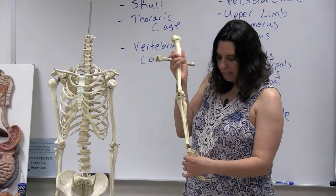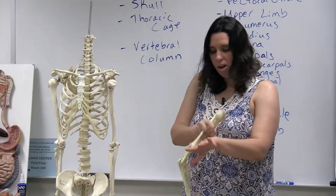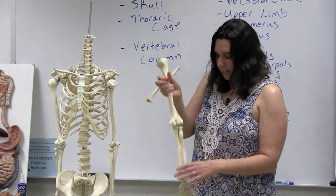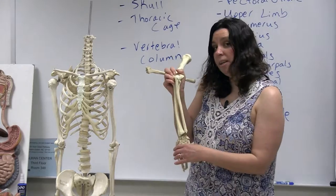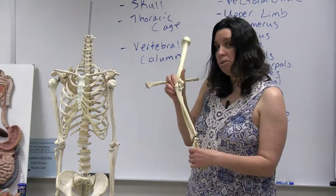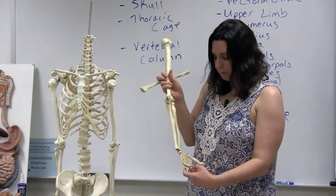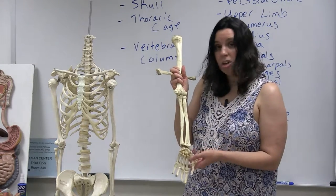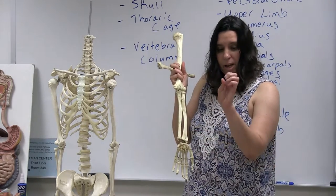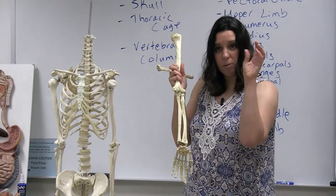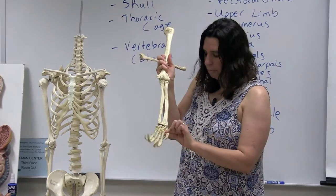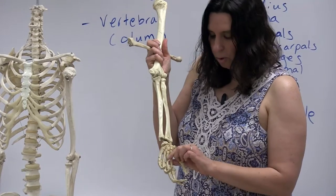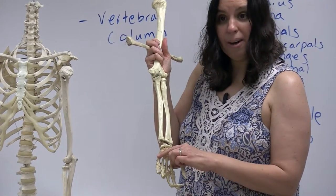Then we have the metacarpals — the bones in your hand. Aside from recognizing them as metacarpals, you also need to be able to number them. The numbering always starts with the metacarpal associated with the thumb, so the metacarpals are numbered one through five going from the thumb outward.